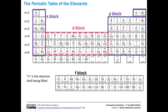The s block is where we're filling the s orbital. For example, if we were to write an electron configuration for calcium, the last entry would be 4s2 — two electrons in it. The d block is where the last orbital being filled is a d orbital. For instance, for titanium, we would be filling a 3d orbital, and it would have two electrons in it.